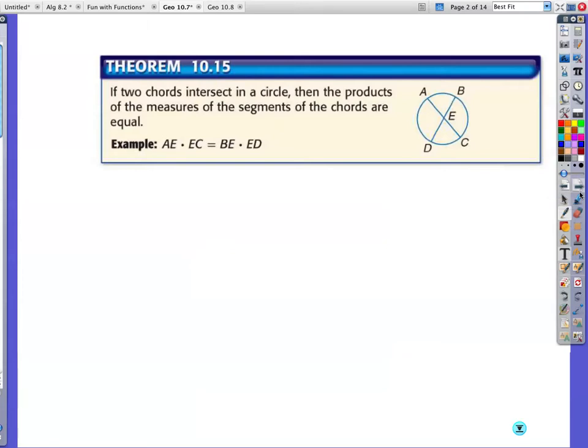We should probably discover this and do some things with patty paper, but we do not have time. So here's your rule. AE, this piece, times EC, this piece, is equal to BE, which is this piece, times ED, which is that piece.